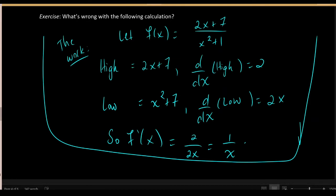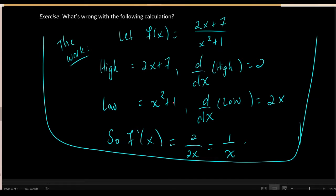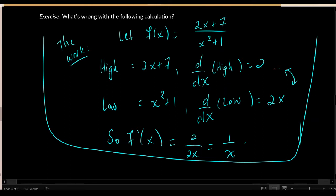Because the quotient rule is this complicated, students under stress sometimes use it incorrectly. A common error: given f of x equals 2x plus 7 divided by x squared plus 1, a student might say the derivative of the top is 2, the derivative of the bottom is 2x, therefore the derivative of the entire fraction is 2 divided by 2x — the quotient of the two derivatives. But that is not correct.